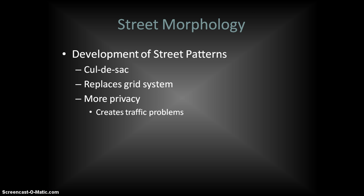One of the other developments we're starting to see is in what we call street morphology — the development of new street patterns. This applies more to low-density areas, where we're seeing the development of neighborhoods that are kind of self-sustaining and separate from everything else. You have the development of what's called the cul-de-sac, which is the endpoint of the neighborhood, and it helps to create more privacy for homeowners.